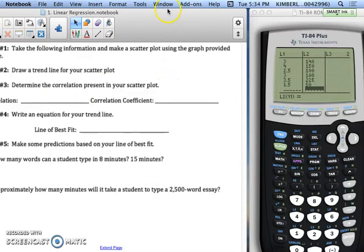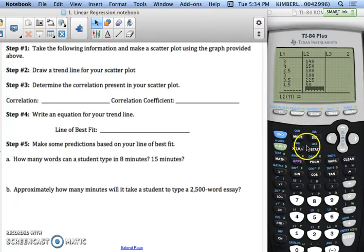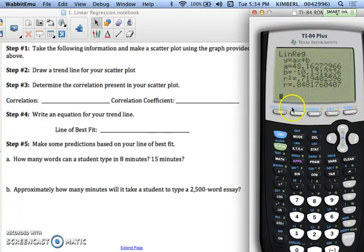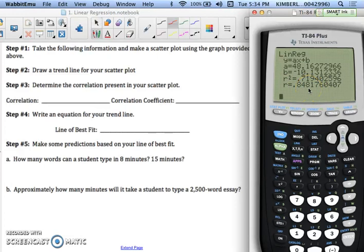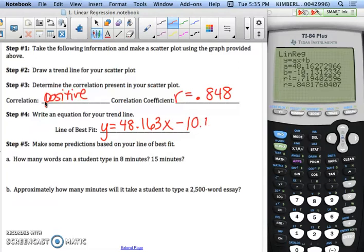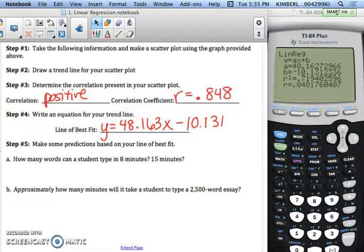So again, you're going to press stat, go over to calculate, and go to 4. Again, you're going to have to go all the way down to calculate to hit enter, but you should get this to pop up. So the correlation is positive, and the correlation coefficient is 0.848, which is pretty good. That's kind of close to 1. The equation of line of best fit would be y equals your a, which was 48.163x, take away 10.131, because that was your b term. So again, that is how you write the equation of line of best fit. Again, round to three decimal places. Look at the third decimal and the number after it.